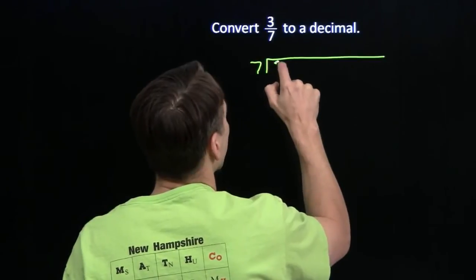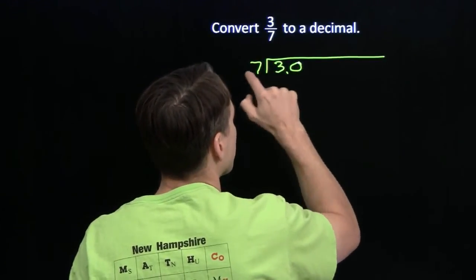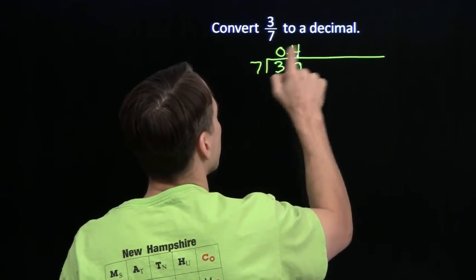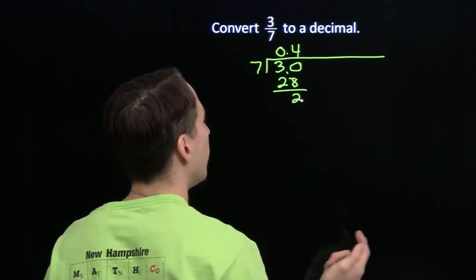Take the 7 into the 3. Of course, 7 doesn't go into 3, and we need some tenths. 7 into 30, that goes 4 times. 7 times 4 is 28, and we have 2 left over.